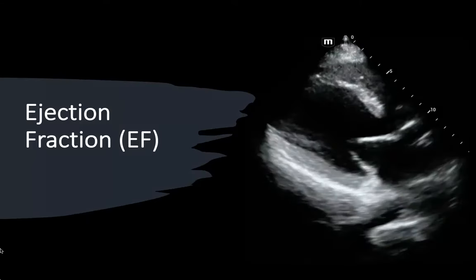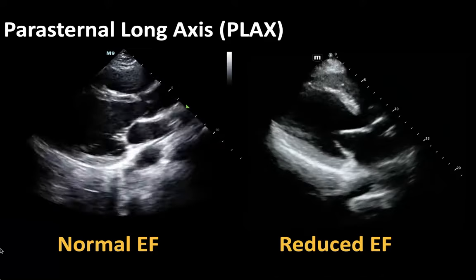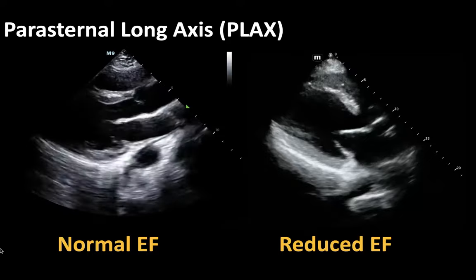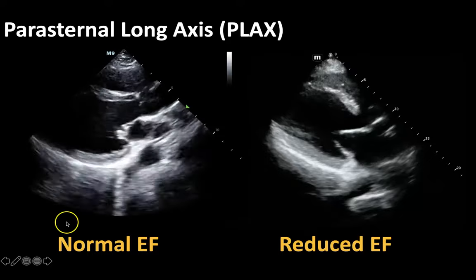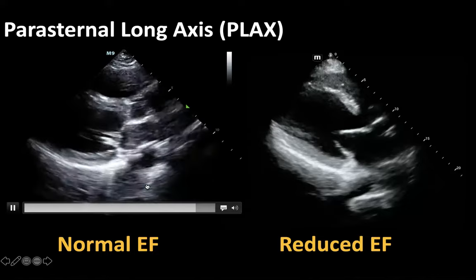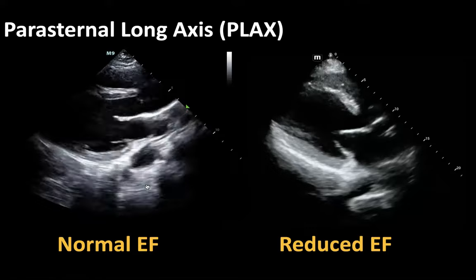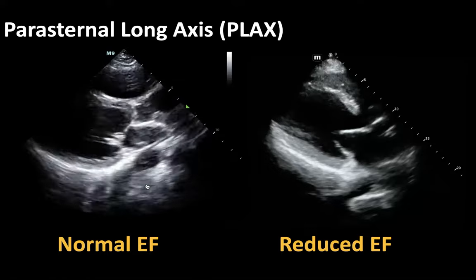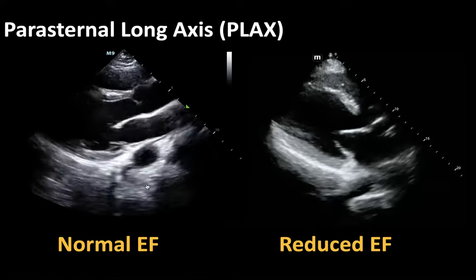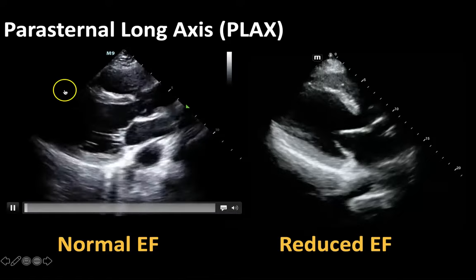So let's dive right into it. When we look at ejection fraction, we're really just looking at how well the heart is squeezing. As a refresher from the last video, we'll go through what we're looking at one more time. This heart on the left side of the screen is going to be a parasternal long axis view of a heart with a normal ejection fraction. Your parasternal long axis view is obtained with your probe at a diagonal plane to the left side of the sternum, with your probe marker facing down towards the apex of the heart.